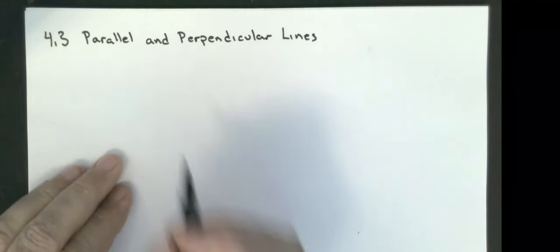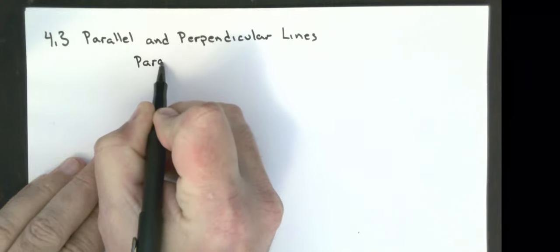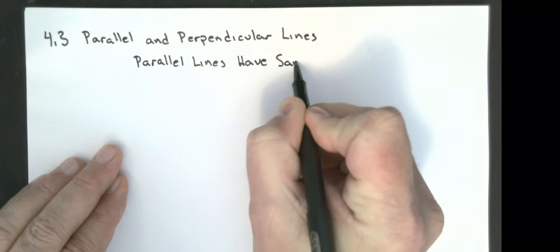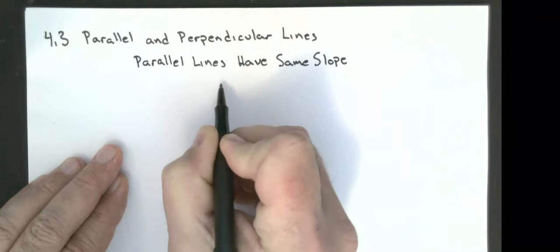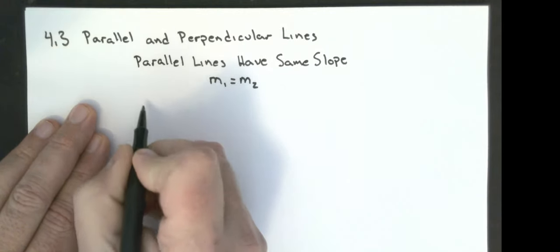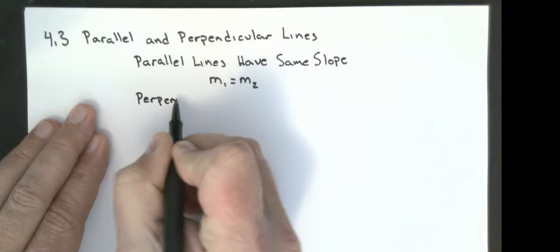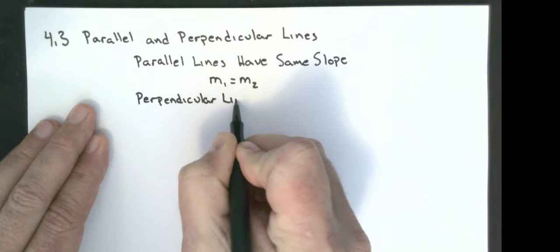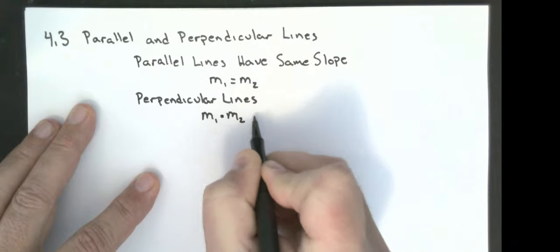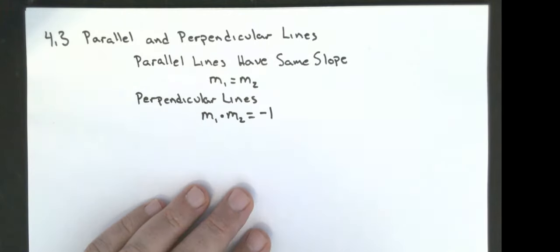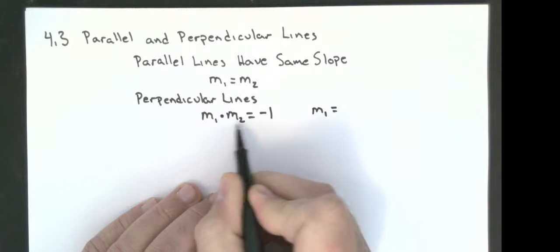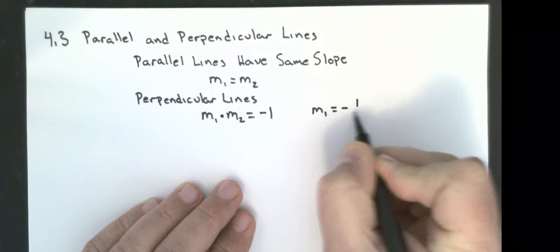Some facts we need to know: parallel lines have the same slope, so the two slopes are equal to each other. For perpendicular lines, two lines are perpendicular if the product of their slopes is negative one. Another way to say this is that if I have a line and I know its slope, I divide both sides by the slope of the other line and get the opposite reciprocal.